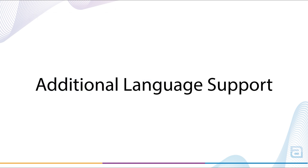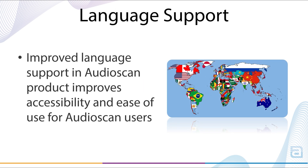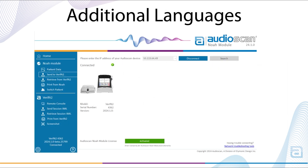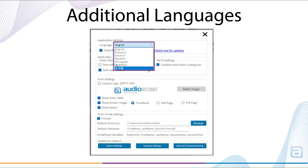To improve the accessibility and ease of use of the Verifit 2 or Axiom along with the AudioScan NOAA module, language support in the AudioScan NOAA module has expanded in the latest software release. Language selection is found within Settings. The same seven languages available on the Verifit 2 and Axiom are now available, with the addition of Japanese, simplified Chinese, and Portuguese to the previously available English, French, German, and Spanish options.